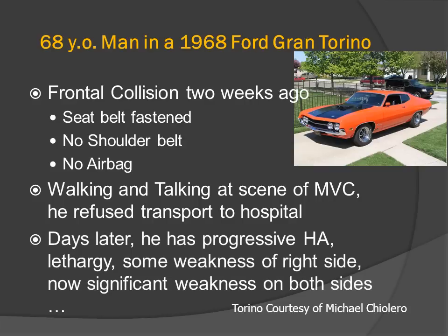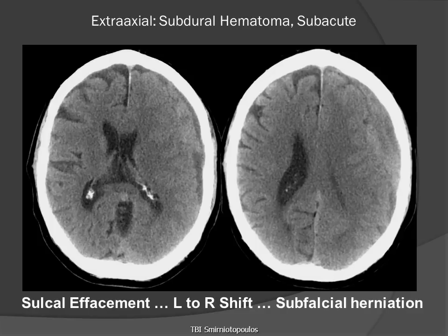Days later, he had progressive headache, lethargy, and some weakness of his right side that has now progressed to significant weakness on both sides. If we look at this pair of axial cross-sectional CT images without contrast, we notice immediately an asymmetry in the size of the cerebral sulci,